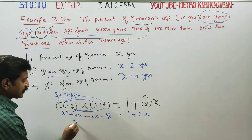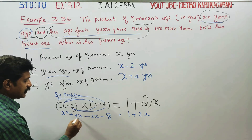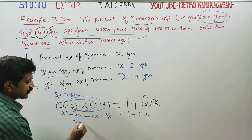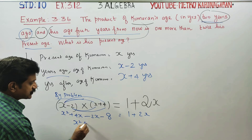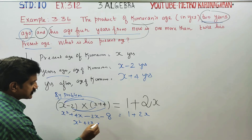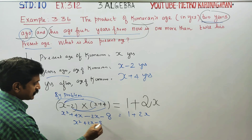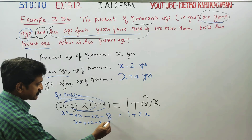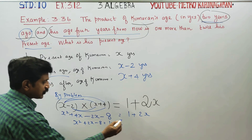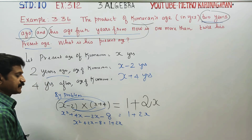Simplifying: x squared plus 4x minus 2x gives x squared plus 2x. Minus 8 equals 1 plus 2x.